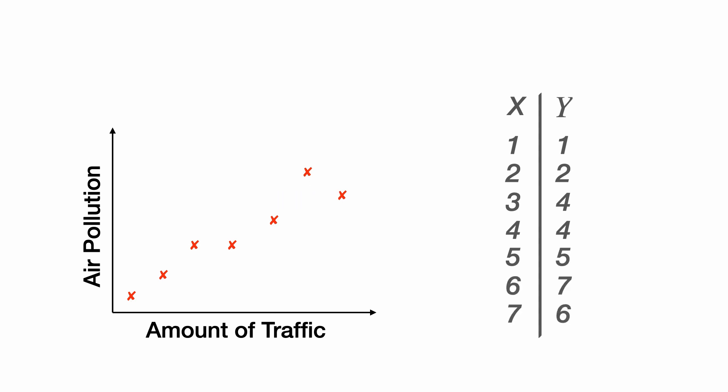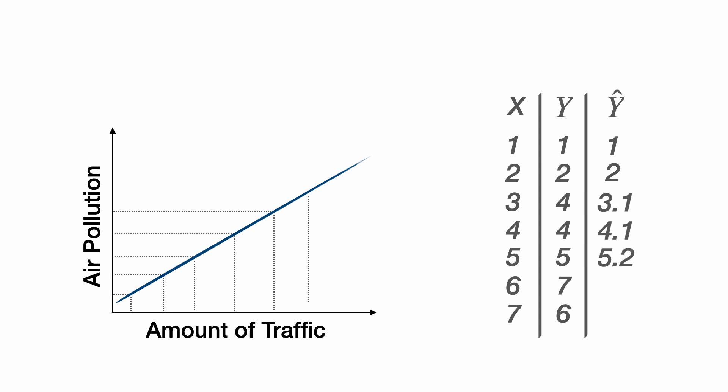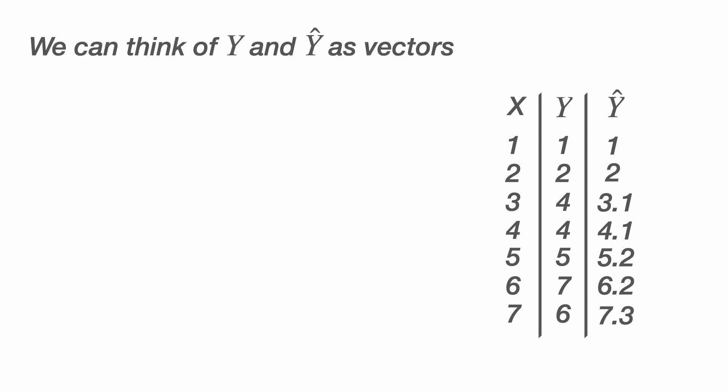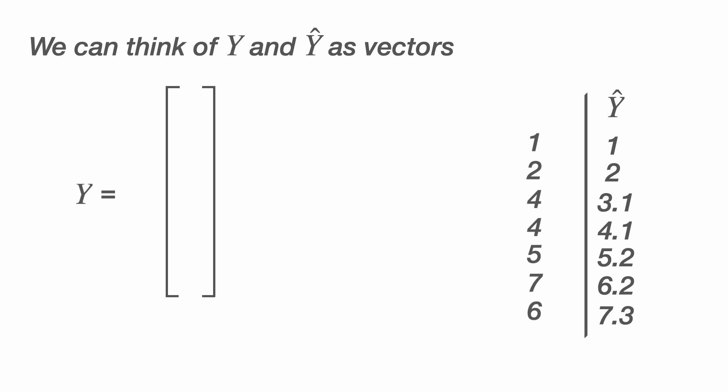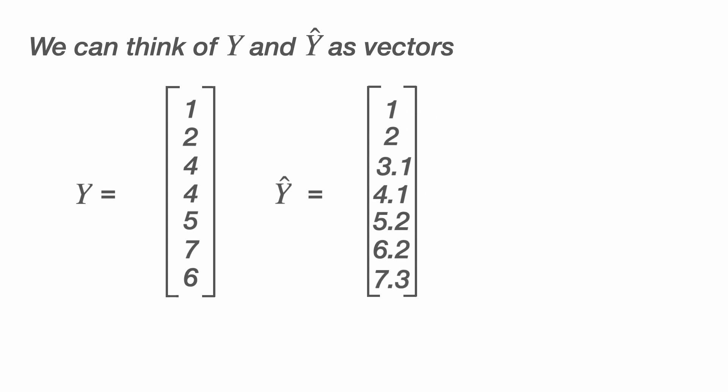Next, I'm going to make a third column, and I'm going to call that Y hat. This is going to contain the predictions for each amount of traffic in our X column for the amounts of air pollution in those areas. Now we're getting closer towards the reason we're interested in vector spaces. We can think of these three columns as column vectors. We're particularly interested in Y and Y hat, and each of these, because they have seven elements, you can think of them as two vectors in seven-dimensional space.